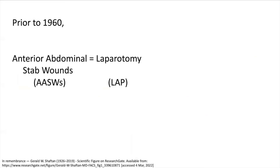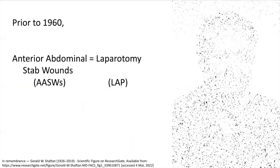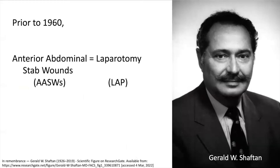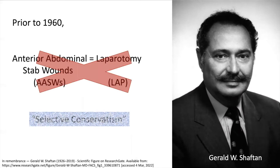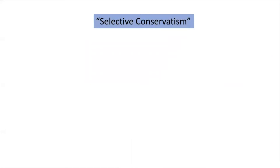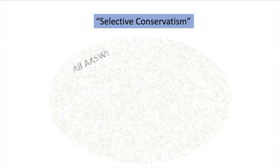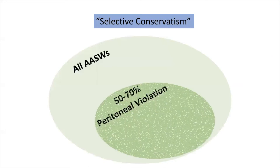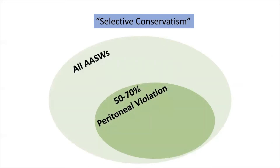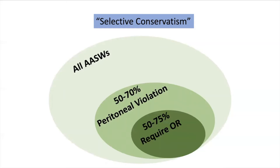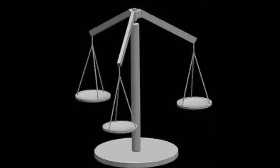Prior to 1960, all anterior abdominal stab wounds underwent operative exploration with a laparotomy. In 1960, however, Dr. Shafton proposed an idea he called selective conservatism — a conservative management strategy using clinical evaluation, based on the knowledge that of all anterior abdominal stab wounds, only some cause peritoneal violation, and even fewer actually cause an injury requiring operative intervention. To this day, the management of anterior abdominal stab wounds in stable patients without clear laparotomy indications remains controversial.